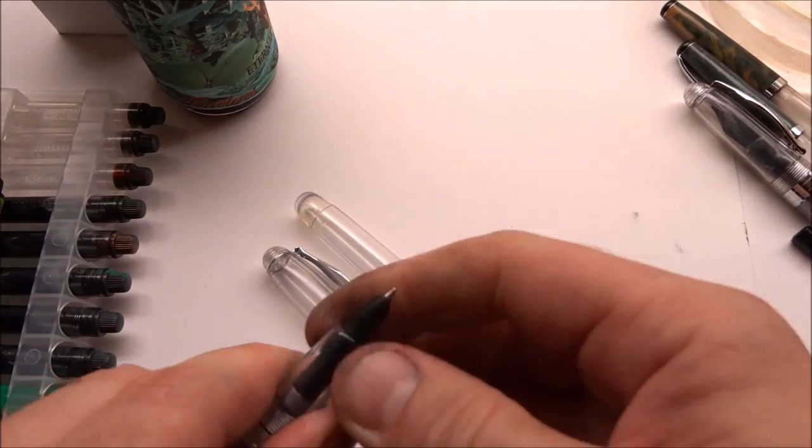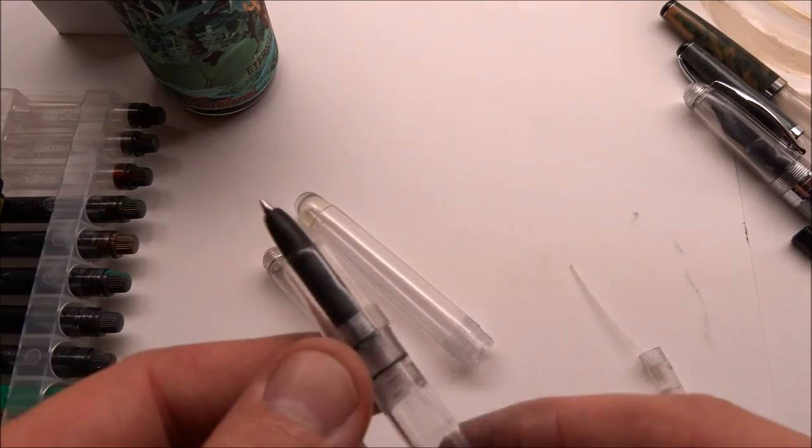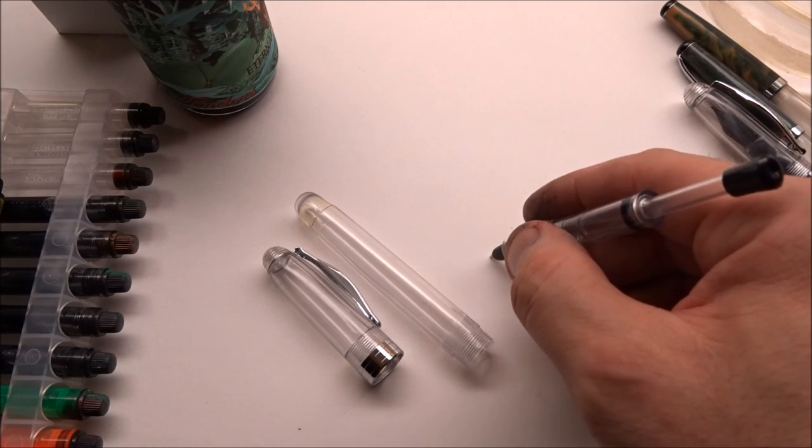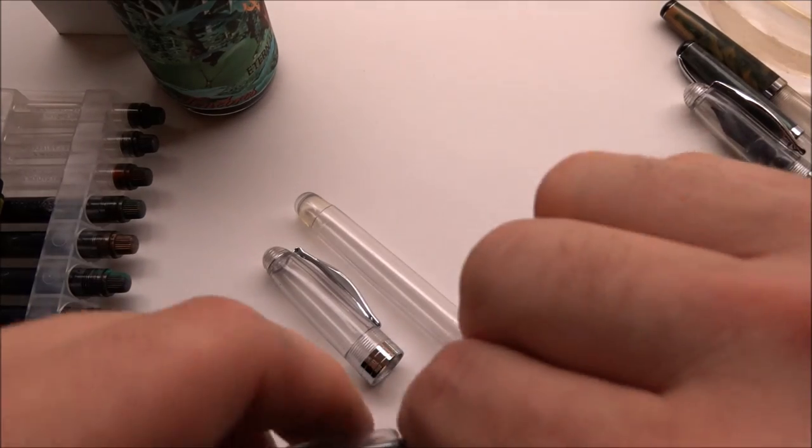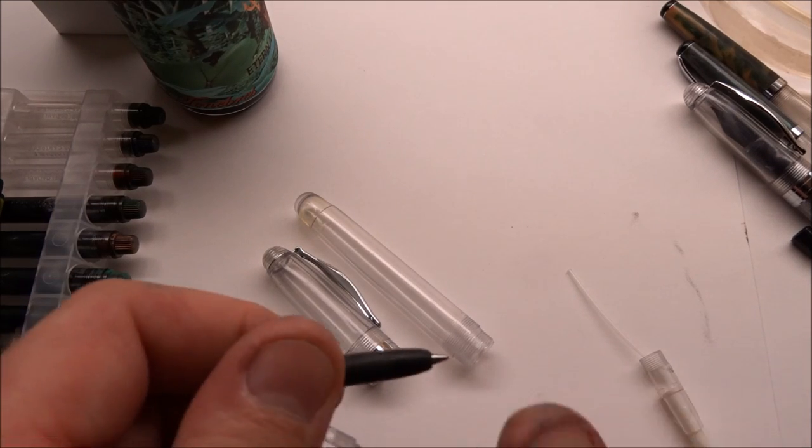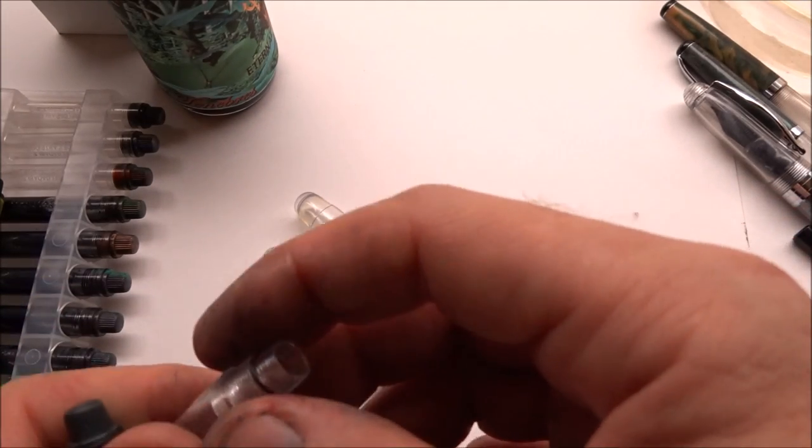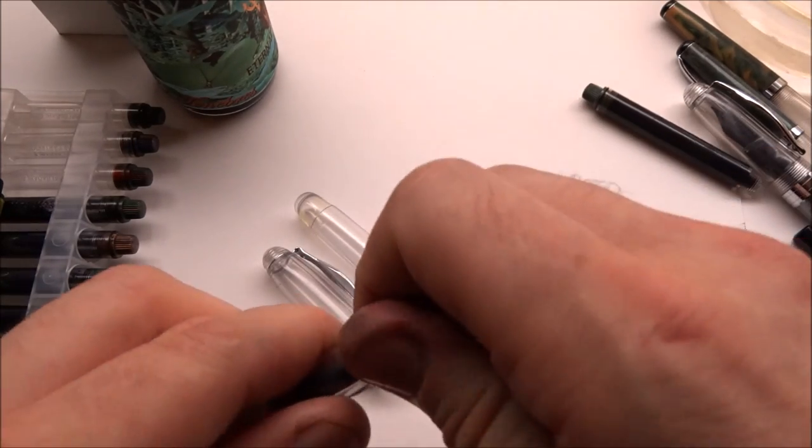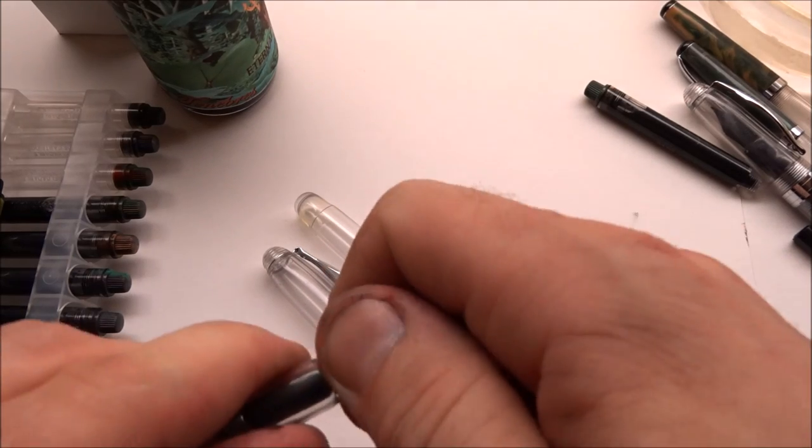If you notice, the inkball feed does not fit the threads of the Ahab. However, right behind those threads, here in this part of the section, with a firm twist you can get it to grip the plastic there because the tolerance is close enough. You can actually get it to grip there. I would suggest only using it this way. You do not require much pressure to write with these.